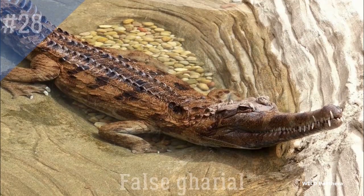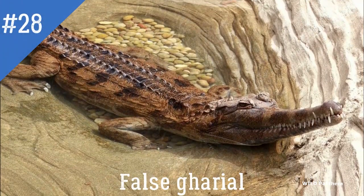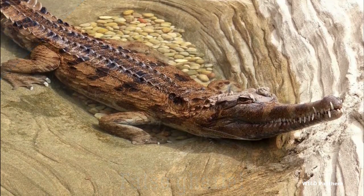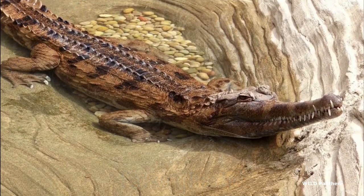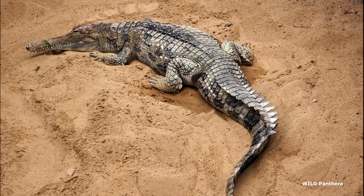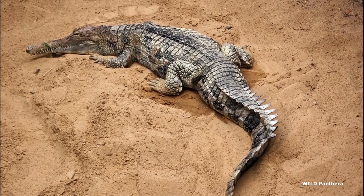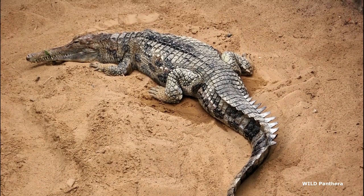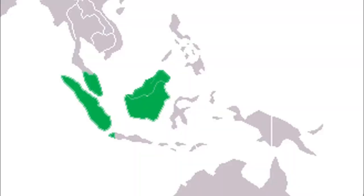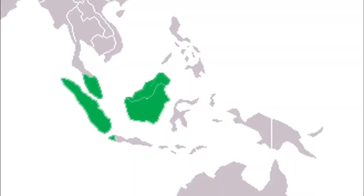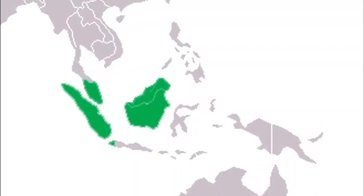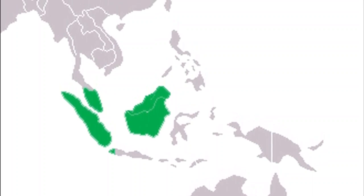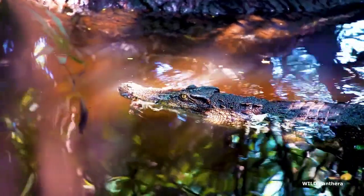27. False Gharial — Tomistoma schlegelii, also known as the Malayan Gharial, Sunda Gharial, or Tomistoma, is native to Peninsular Malaysia, Borneo, Sumatra, and Java.